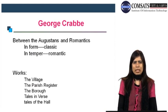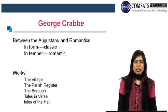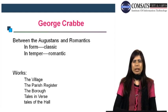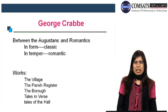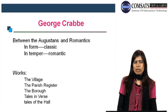George Crabbe, another writer in the later half of the 18th century, is between the Augustans and Romantics — between Classics and Romantics. In form he is classical, but in temper he is romantic again. The techniques he used were classic, but the themes he followed were romantic. His works are The Village, The Parish Register, The Borough, Tales in Verse, and Tales of the Hall. In all his works, you can see Classical plus Romantic traditions: classical form and romantic themes and contents.